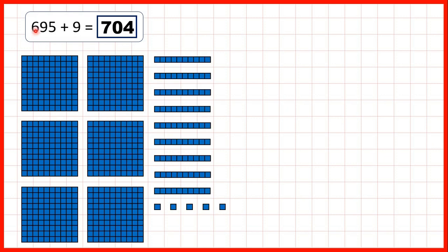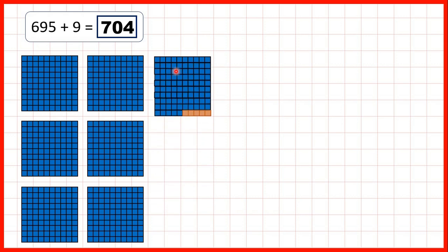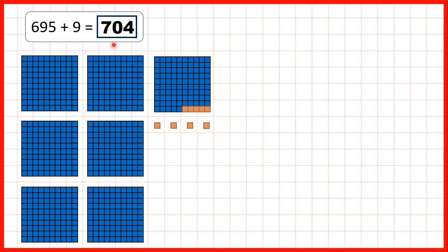Now we started with six hundred and ninety-five — so six hundreds, nine tens, and five ones. If we first add five, that gives us ten ones, which we can exchange for one ten, but now we've got ten tens, so we need to exchange those for one hundred. So adding five has given us seven hundred, but we want to add nine, so we need to add four more to give us seven hundred and four as our answer.